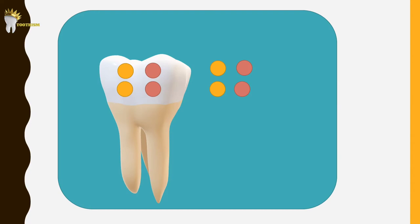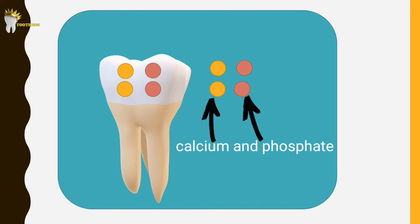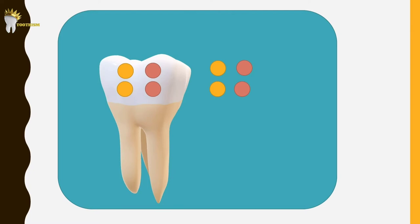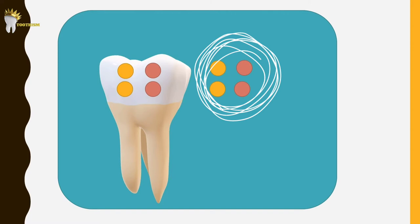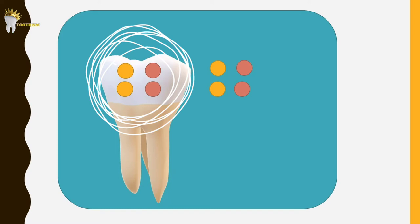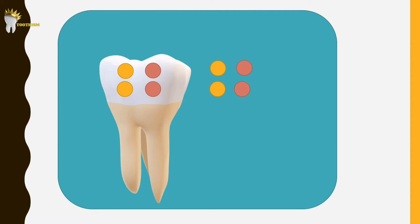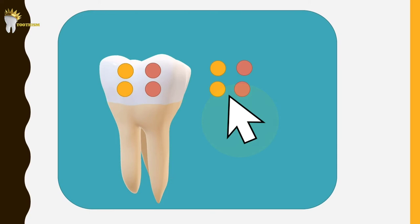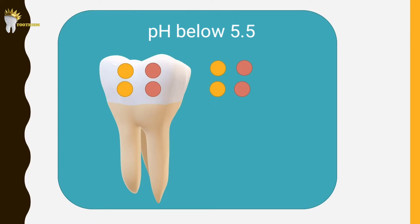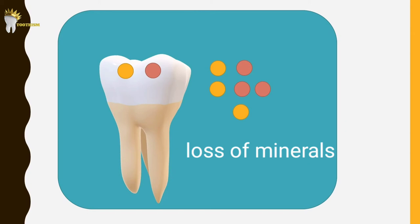The hydroxyapatite of tooth enamel primarily contains calcium and phosphate ions. Under normal conditions, there is a stable equilibrium between the calcium and phosphate ions in the saliva and the hydroxyapatite crystals of the tooth — which make up 96% of the enamel. When the pH drops below 5.5, it drives the calcium and phosphate ions from the tooth into the biofilm in an attempt to reach equilibrium, resulting in loss of minerals from the tooth — called demineralization. When the pH returns to normal, remineralization of enamel takes place.